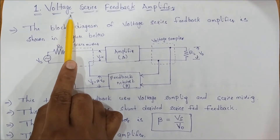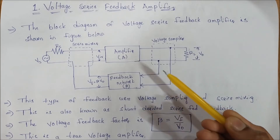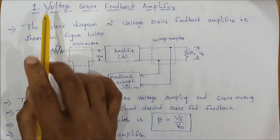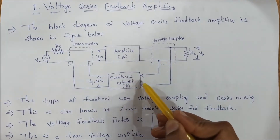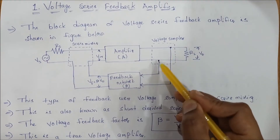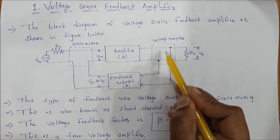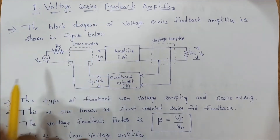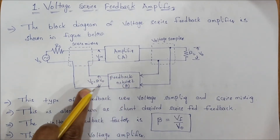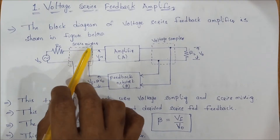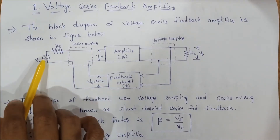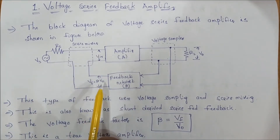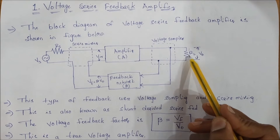This is the block diagram of the voltage series feedback amplifier. Here the feedback network performs voltage sampling. The output is parallel connected — dotted lines show parallel connection for voltage sampling. The second term is series mixing on the input side, where the feedback network is connected in series. The feedback voltage vf equals beta times v0, and rl is the load resistor giving the output voltage.